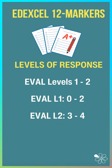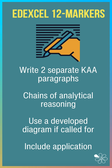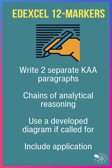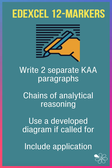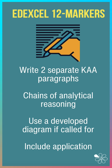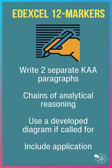Add the two together and you get your mark out of 12. For a 12 marker, I do recommend that you write two separate KA paragraphs. You can write one developed point with a supporting diagram, so look to see what the question asks for. Build chains of reasoning, and do try to use the developed diagram if called for.